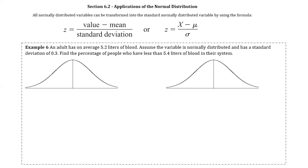In this section we're going to look at a few application questions. Example 6 says that an adult has on average 5.2 liters of blood. Assume the variable is normally distributed with a standard deviation of 0.3. Find the percentage of people who have less than 5.4 liters of blood. So I'm going to label the average of 5.2 in the middle of my curve, place 5.4 on there, and shade to the left.